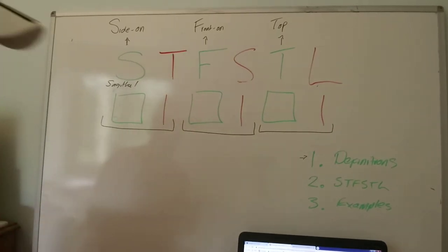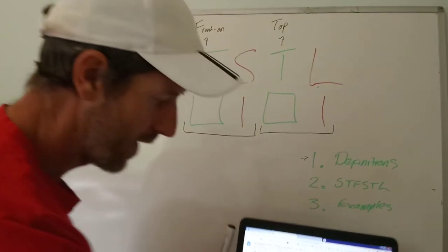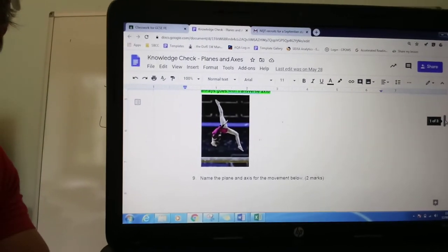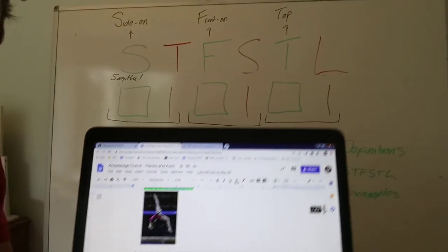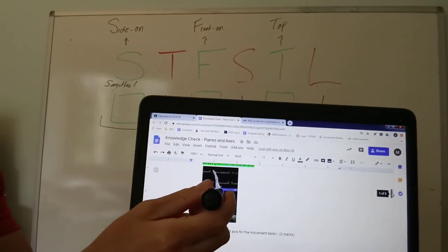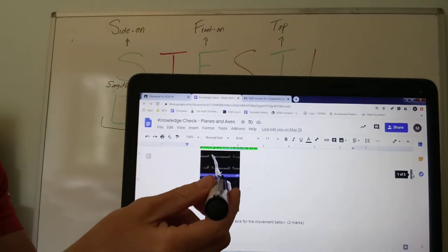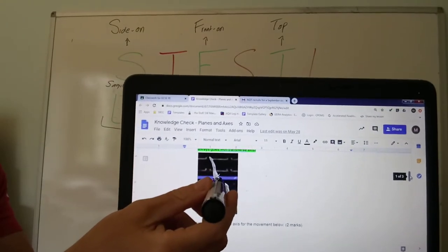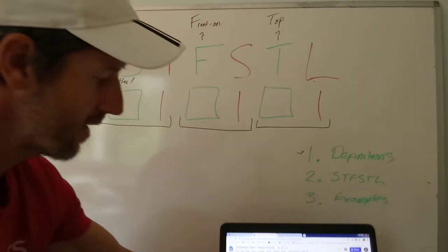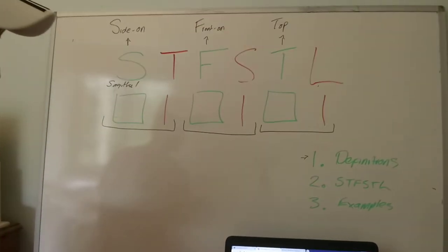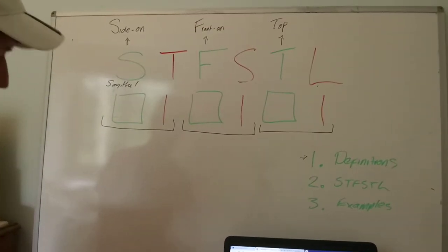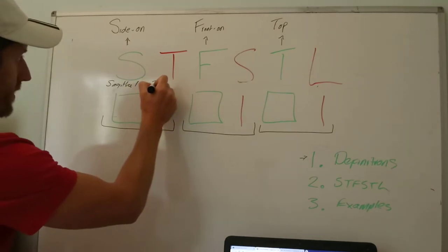The movement happening in a sagittal plane — for example, the gymnast — will also be occurring around the transverse axis. Imagine there's a rod going through from the left side of the body to the right side of the body. That is the transverse axis.